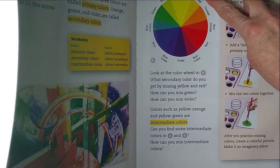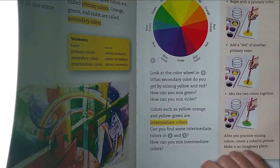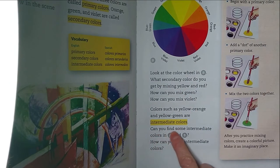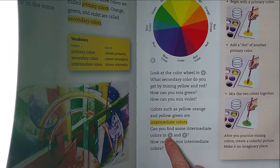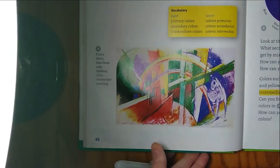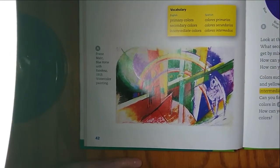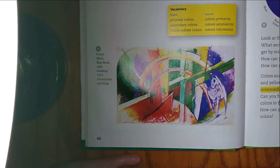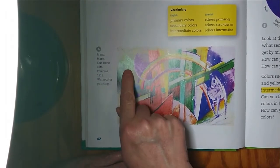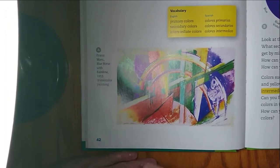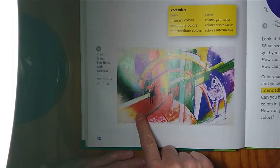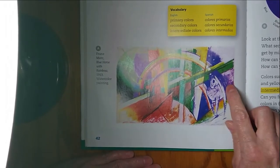Colors such as yellow-orange and yellow-green are called intermediate colors. Can you find some intermediate colors in A and B? Let's look back at A. I see yellow-orange, I see yellow-green, I see red-orange, and I see blue-violet.